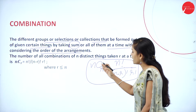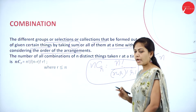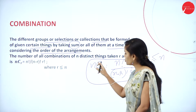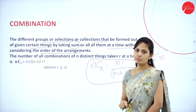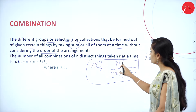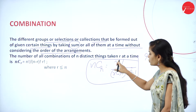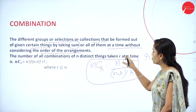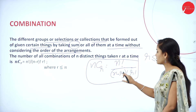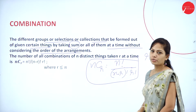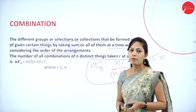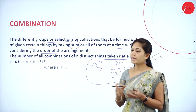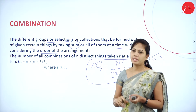In combinations we have NCR. Keep in mind, R value is always less than or equal to N value. So NCR is equal to N factorial by N minus R factorial into R factorial. This is the formula for combinations — combination means without considering any order.